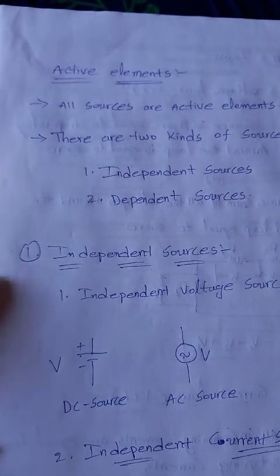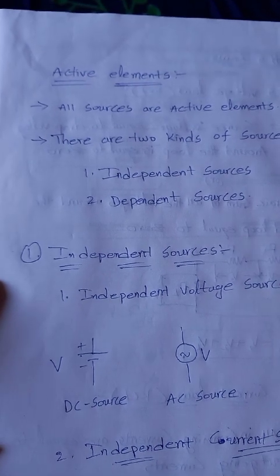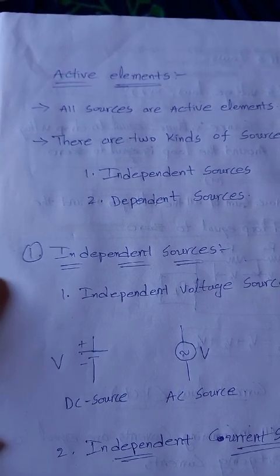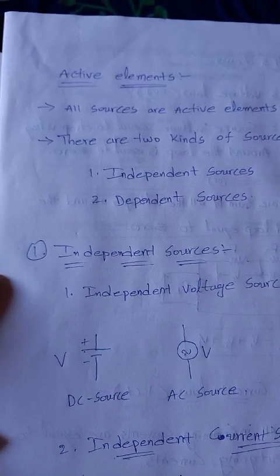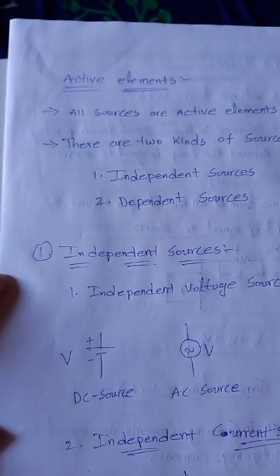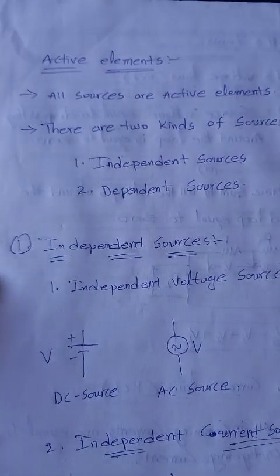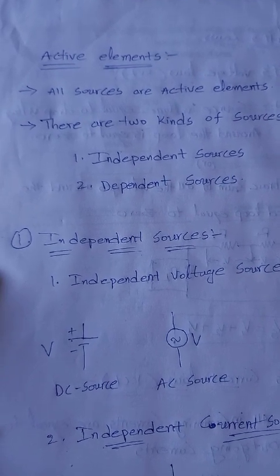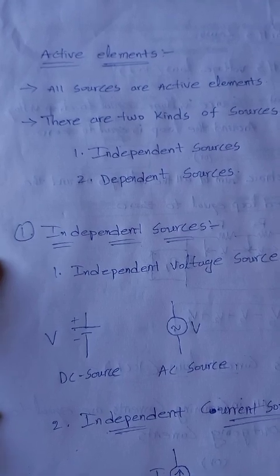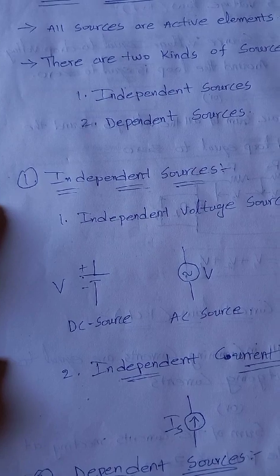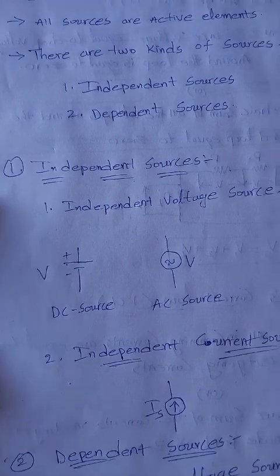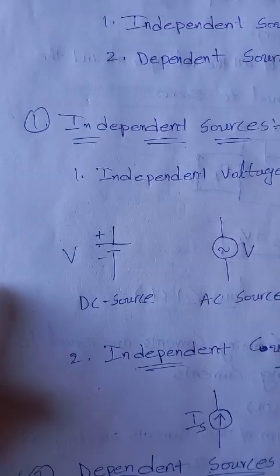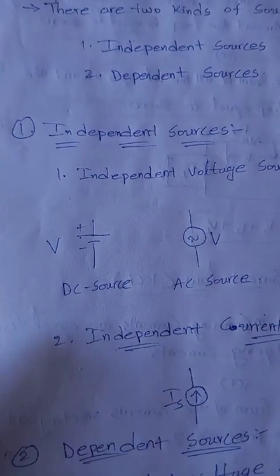Good morning friends. Today our topic is active elements. We already discussed active elements previously — voltage source and current source. These sources have two different types: one is independent source and another one is dependent source. We will first show independent sources, which are of two types: independent voltage source and independent current source.